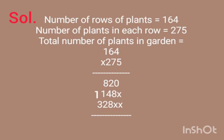Now our next line. Nothing under 0, so we will put a cross. 7 fours are 28, so we will write 8 and carry 2. 7 sixes are 42 plus 2 is 44, so we will write 4 and carry 4. 7 ones are 7 plus 4 is 11.